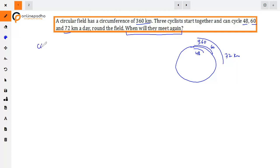What do we need? The circumference of the field is 360 km. For the first cyclist, how much time to cover one round? 360 divided by 48. They cycle 48 km in one day, so 360 divided by 48 equals 15/2 days to complete one round.